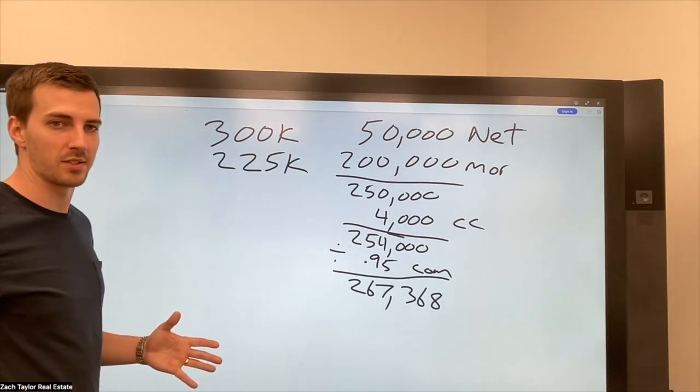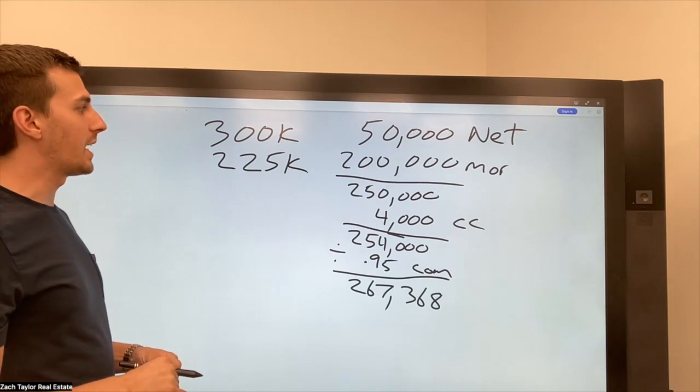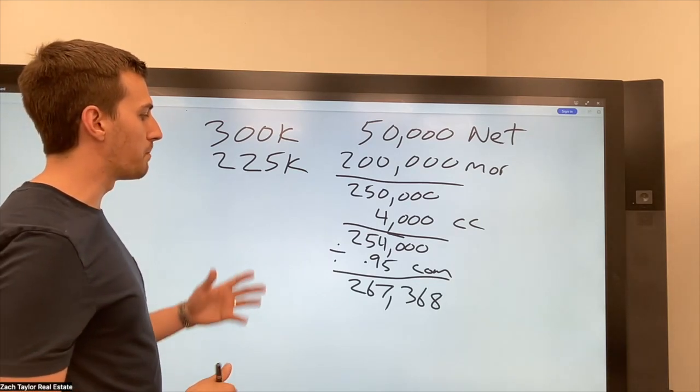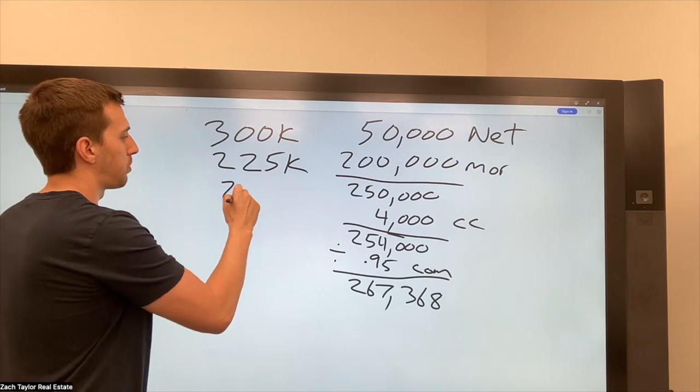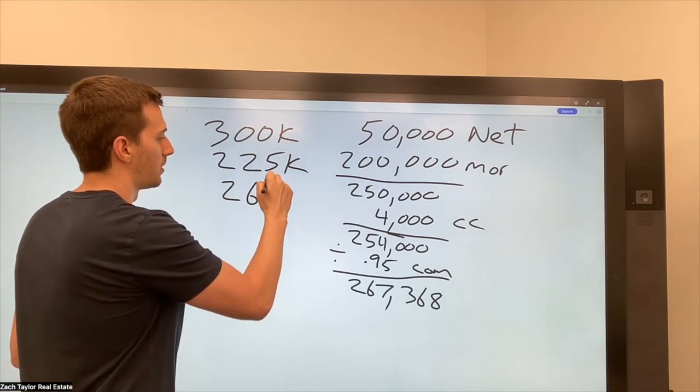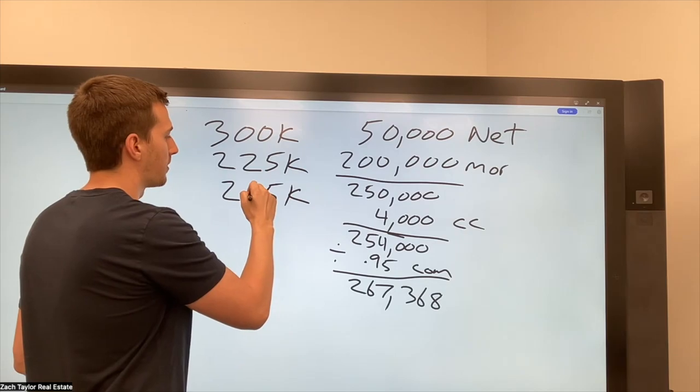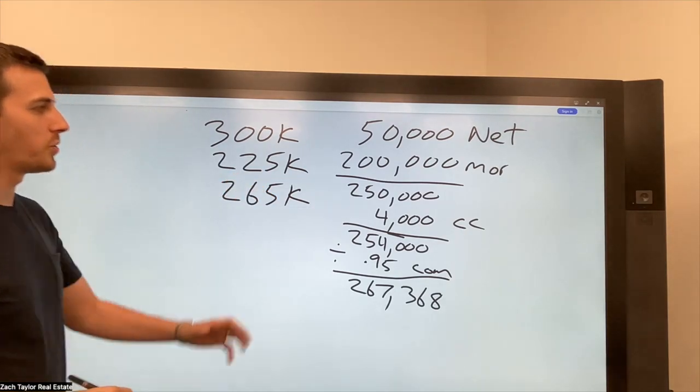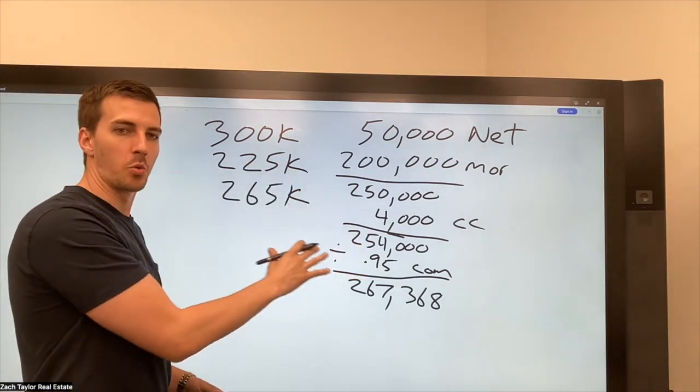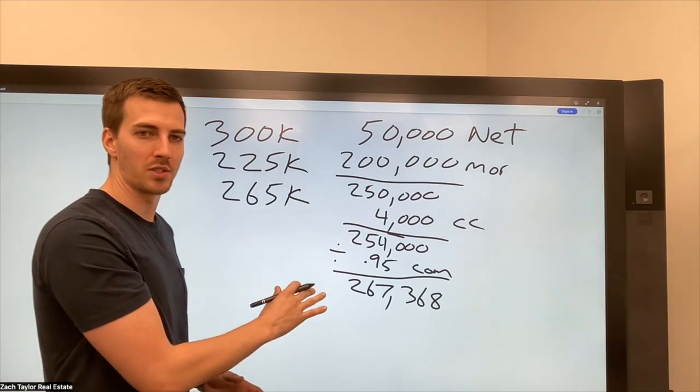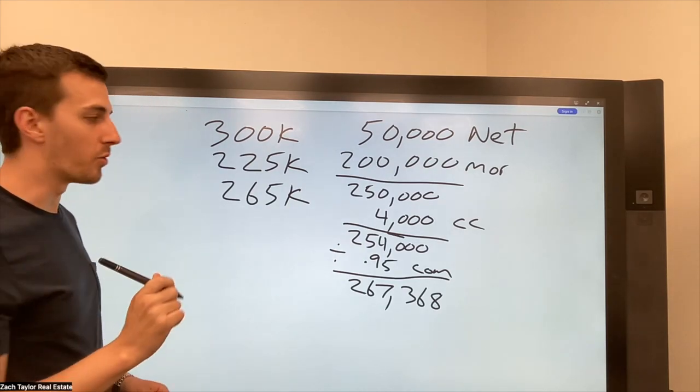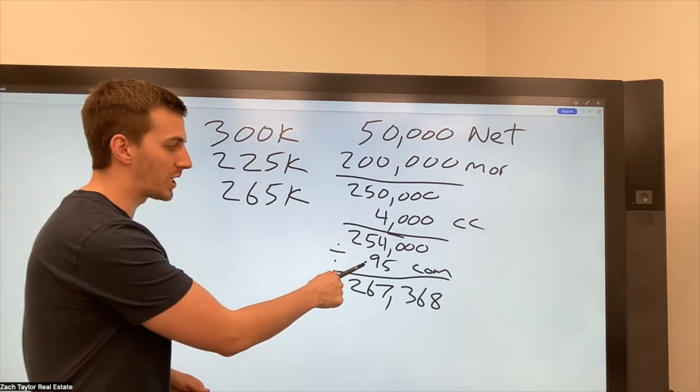That's just not good business in general, but let's say a situation comes up and maybe the home can probably be listed and sold around 265. Well, if we know how to work these numbers, we might be able to make a win-win situation still.